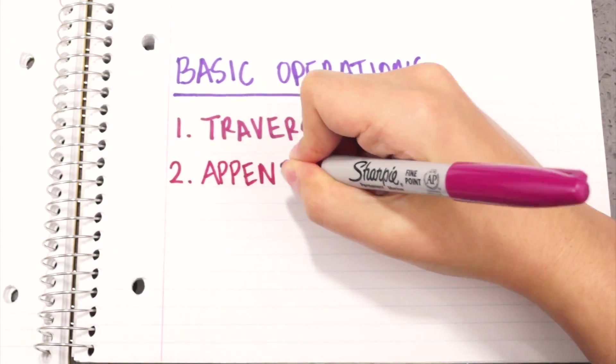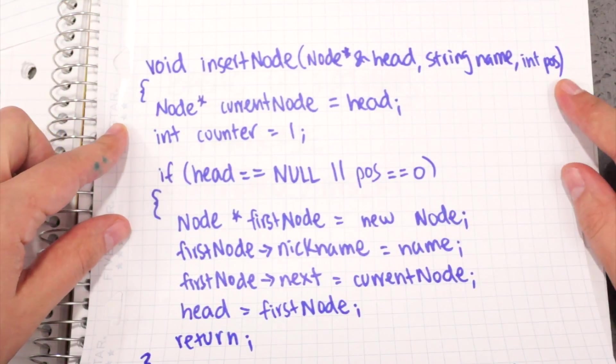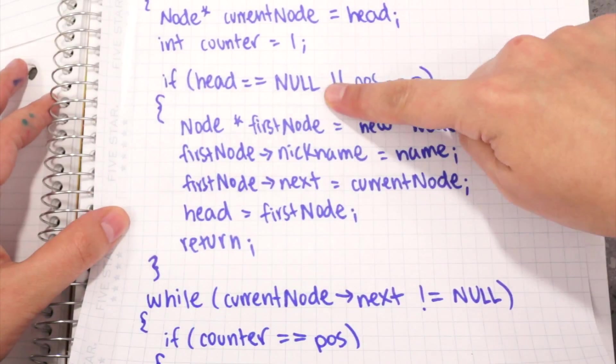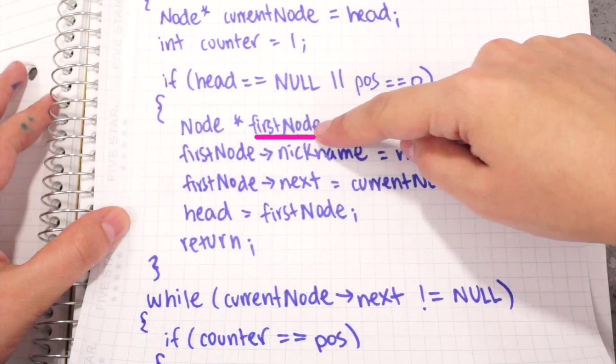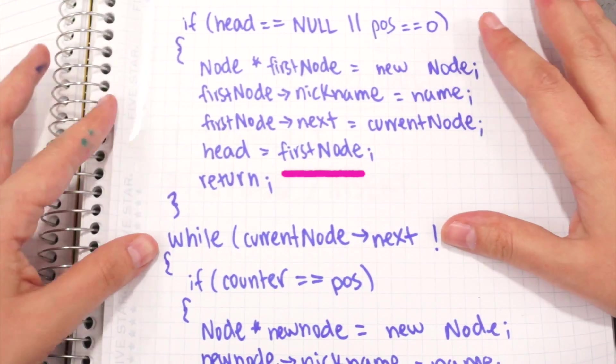Let's try appending and inserting nodes. In this function, I pass the head of the list, the nickname I want to store, and the position I want to store it in. If the position is the first in the list, I create the new node, set its successor pointer to the head, and set the node as the new head.